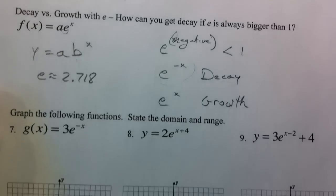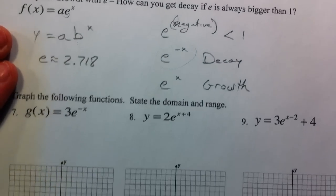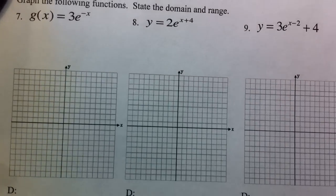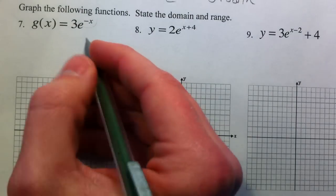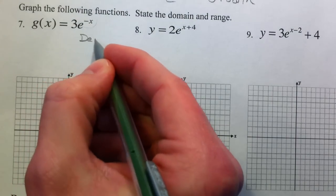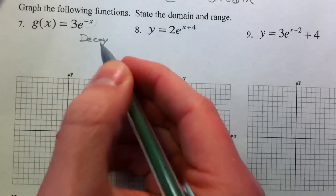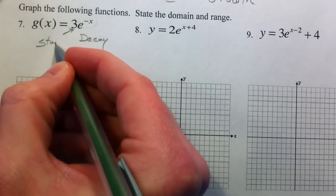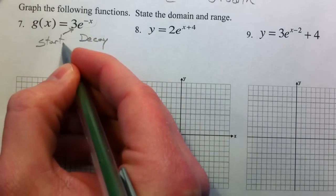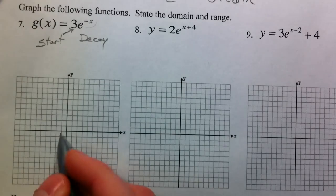So things to remember. We always talked about three things. Y equals 3 times e to the negative x. That negative x is going to make this a decay graph. 3 was our starting value, your initial value, and so we start at 3.